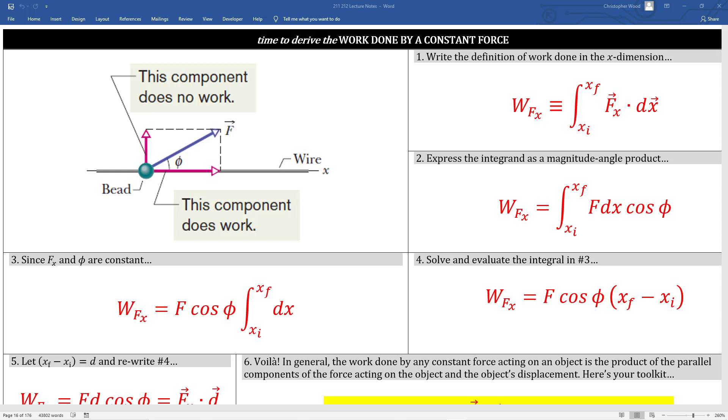Imagine a bead on a wire and you apply a force in the direction shown in this visual. As mentioned before, the Y component of your applied force does no work whatsoever. If the object doesn't move in the direction of the force, no work occurs. On the other hand, the horizontal component does do work because it is moving the object in the same direction as the applied force itself.